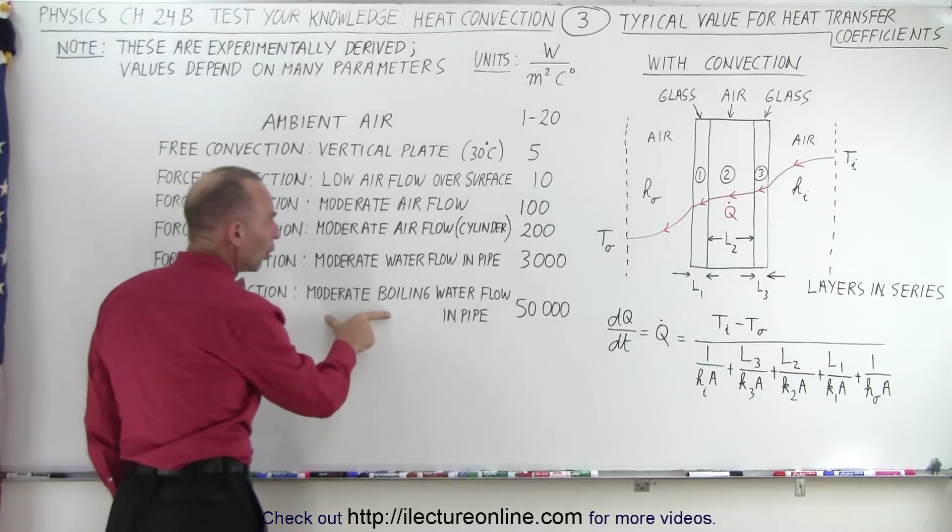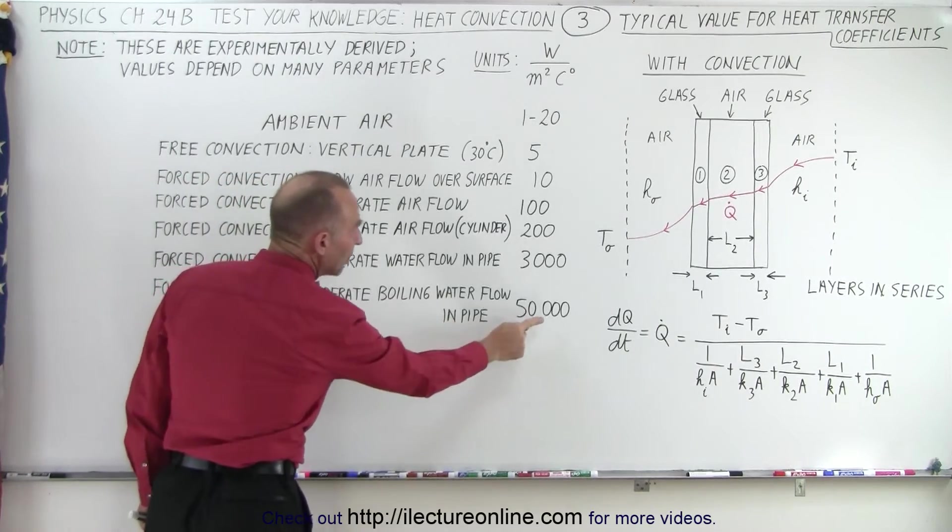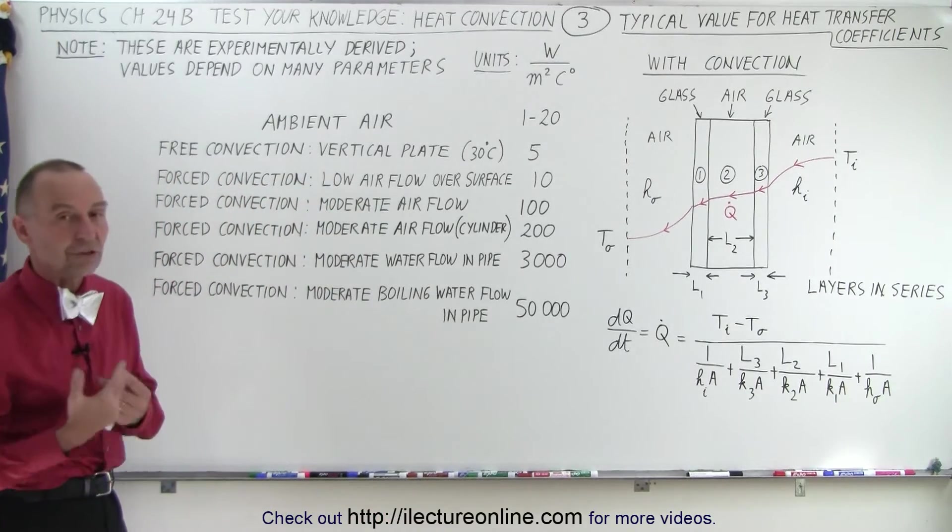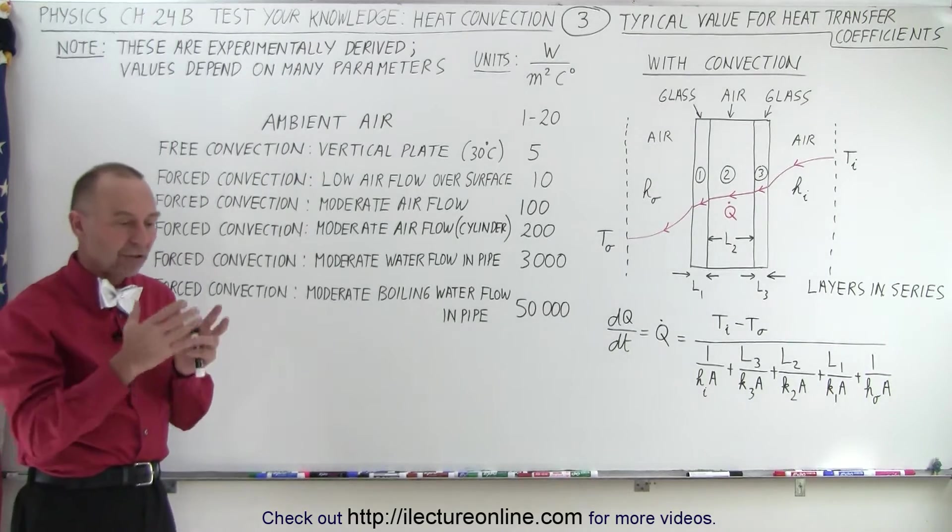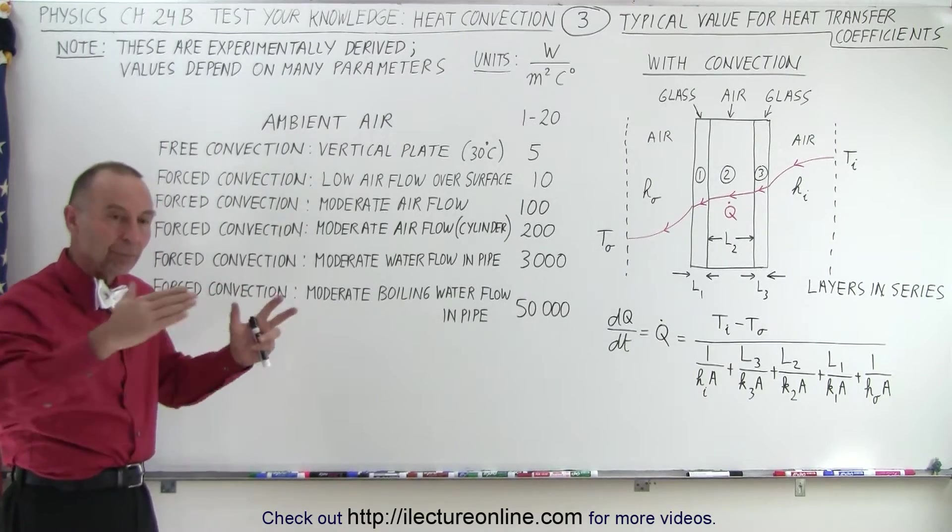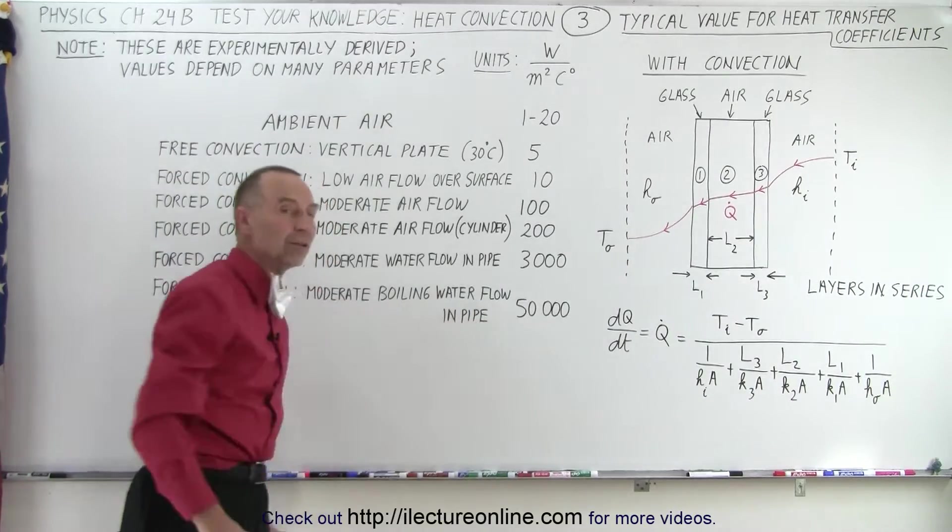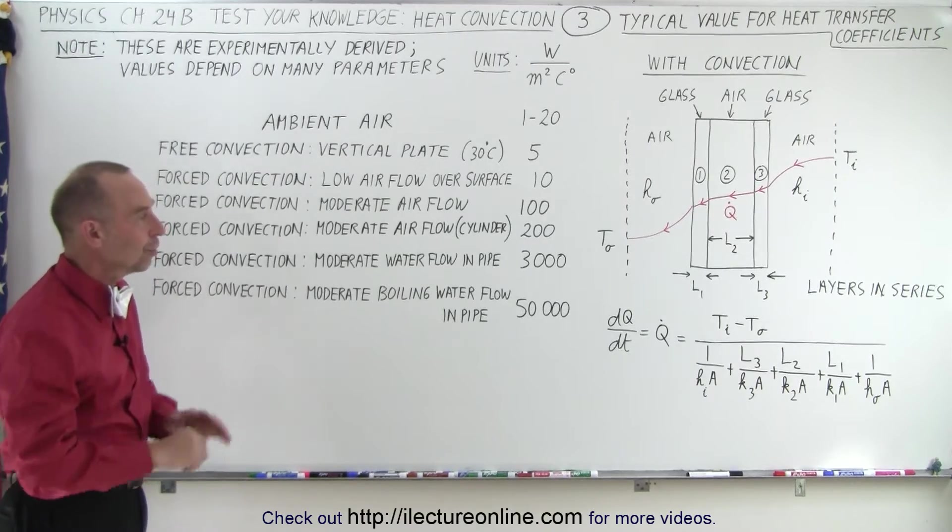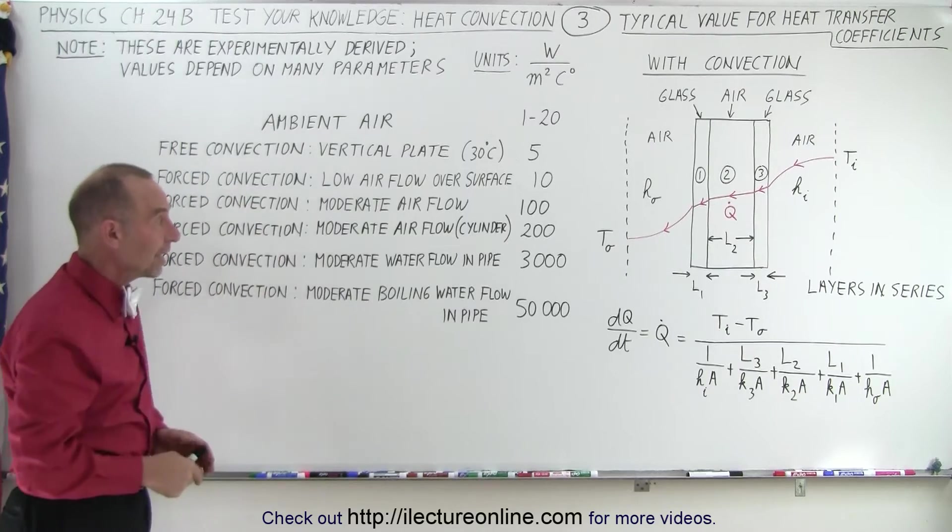And then finally, forced convection, moderate flow, but in this case it's boiling water inside a pipe, and notice it jumps all the way up to 50,000. That is a huge transfer heat because of boiling water. So if you want to transfer heat from inside a pipe to the outside, notice if you put boiling water in the pipe, there's a tremendous amount of heat transfer because that boiling water will readily give heat off to the pipe around it. So notice that there's a huge variation.